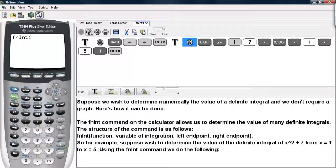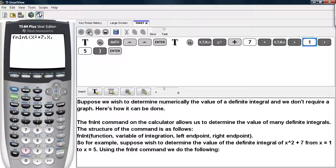Using the fnint command, we do the following. Go ahead and type in x squared plus 7. That is the function. We tell it we want to integrate with respect to x, starting at 1 and ending at 5.